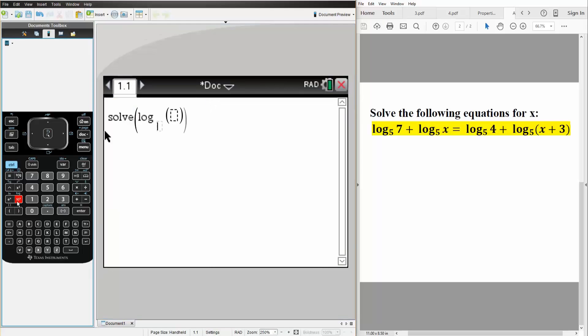We do Ctrl-Log. Our base here is now 5, so we write 5 in the base. 7 plus log base 5x is equal to, we do Ctrl-Log, we have base 5, and inside is 4.